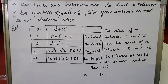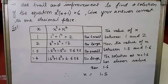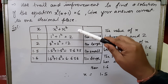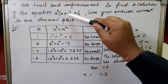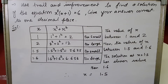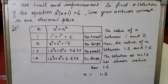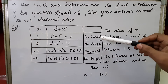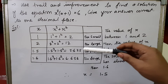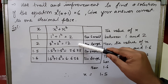Again we try values, improvise, and move toward the solution to one decimal place. When we multiply x² inside the bracket we get x³ + x². Let's start by assuming x between 1 and 2. When x = 1: 1³ + 1² = 1 + 1 = 2, which is too small compared to 6.